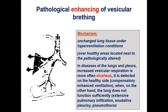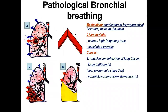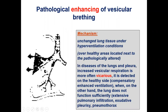Pathological enhancing of vesicular breathing — increased audibility — is connected with a vicarious or compensatory mechanism. For example, imagine one lobe is affected by pneumonia and switched off. Other healthy parts of the lungs try to compensate and increase their function, and on the healthy parts, vesicular breathing will be enhanced.